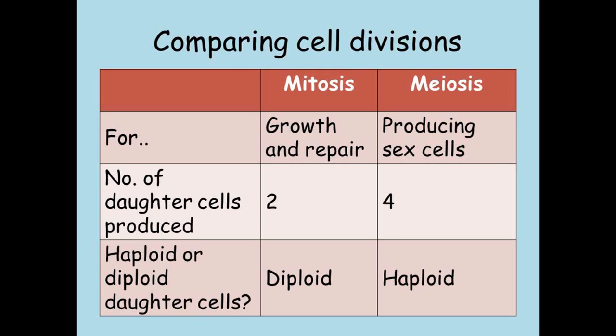Mitosis produces diploid cells, whereas meiosis produces haploid cells. Mitosis is used for growth and repair, while meiosis is used to produce gametes for sexual reproduction.